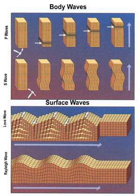Secondary waves are shear waves that are transverse in nature. Following an earthquake event, S waves arrive at seismograph stations after the faster moving P waves and displace the ground perpendicular to the direction of propagation. Depending on the propagational direction, the wave can take on different surface characteristics; for example, in the case of horizontally polarized S waves, the ground moves alternately to one side and then the other. S waves can travel only through solids, as fluids do not support shear stresses. S waves are slower than P waves, with speeds typically around 60% of that of P waves in any given material. The absence of S waves in Earth's outer core suggests a liquid state.